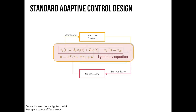Here is the reference system — I want my system to behave like this linear system. A_R is asymptotically stable, or so-called Hurwitz, and hence it satisfies the Lyapunov equation. B_R is the command input matrix and C is the command. If you think about a second-order reference system, you choose it such that you have a desired settling time, rise time, overshoot, and so on. This is your desired closed-loop model that you would like to ultimately achieve.